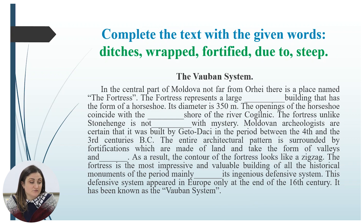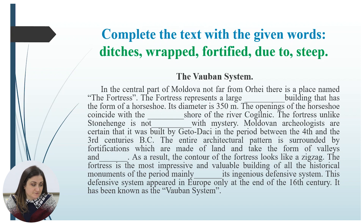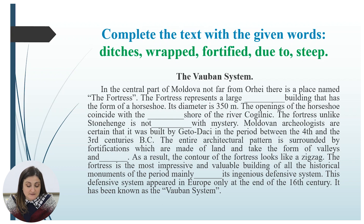The Vauban system. In the central part of Moldova, not far from Orhei, there is a place named the Fortress. The Fortress represents a large fortified building that has the form of a horseshoe. Its diameter is 350 meters. The openings of the horseshoe coincide with the steep shore of the river Kogulnik. The fortress, unlike Stonehenge, is not wrapped with mystery. Moldovan archaeologists are certain that it was built by Geto-Dacians in the period between the 4th and the 3rd centuries before Christ. The entire architectural pattern is surrounded by fortifications which are made of land and take the form of valleys and ditches.